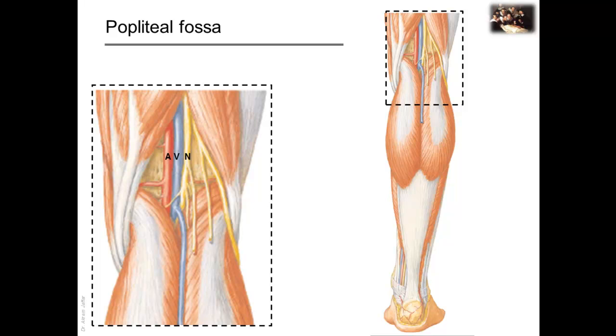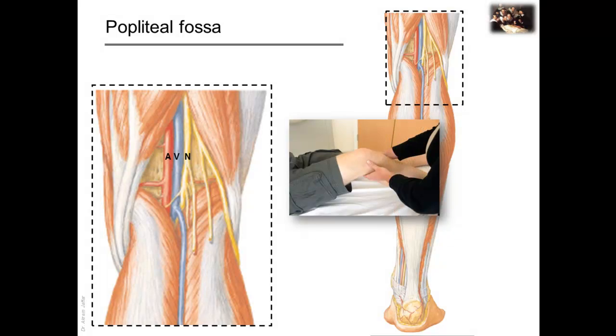Here, the arrangement of structures is artery deepest, then the vein, and then the nerves are most superficial. That's why arterial pulsations can only be felt by deep palpation within the fossa when the knee is flexed to relax the fascial roof.